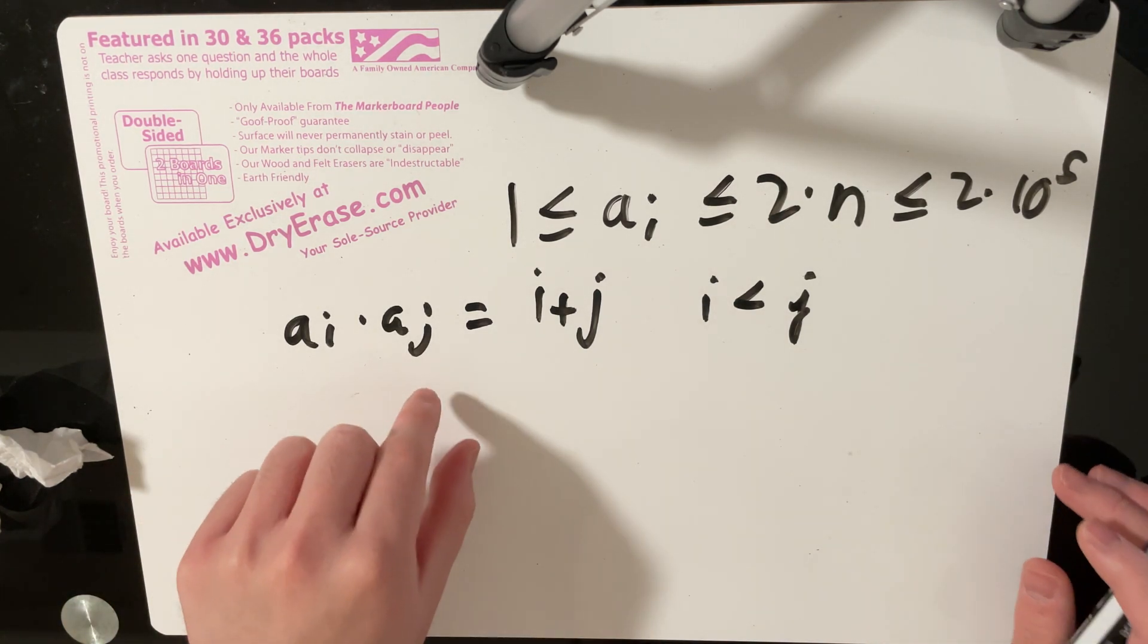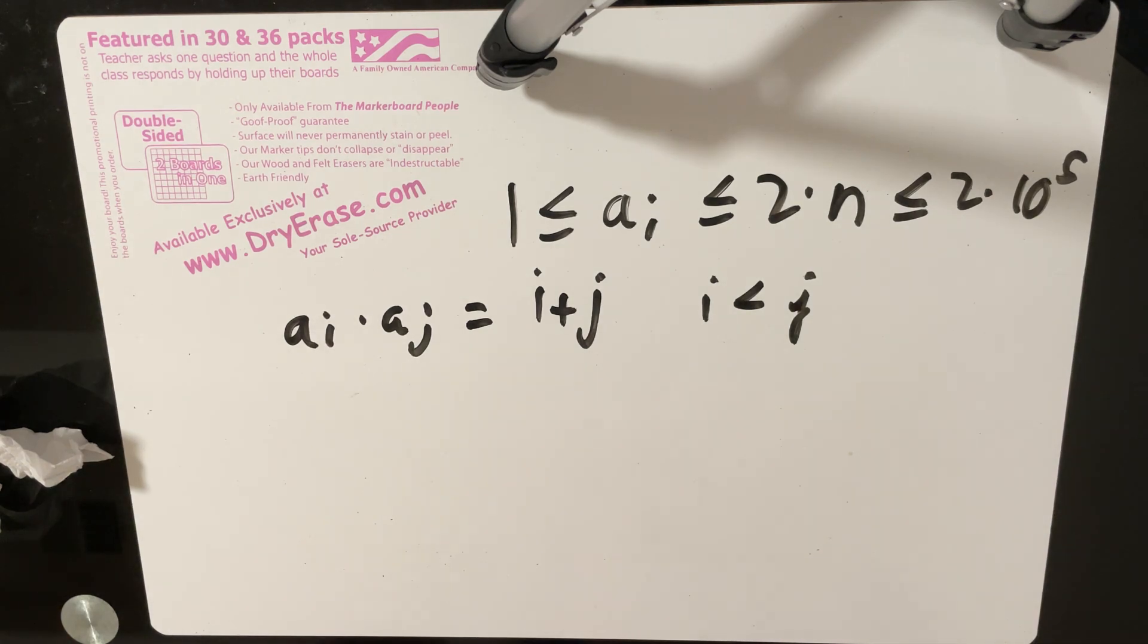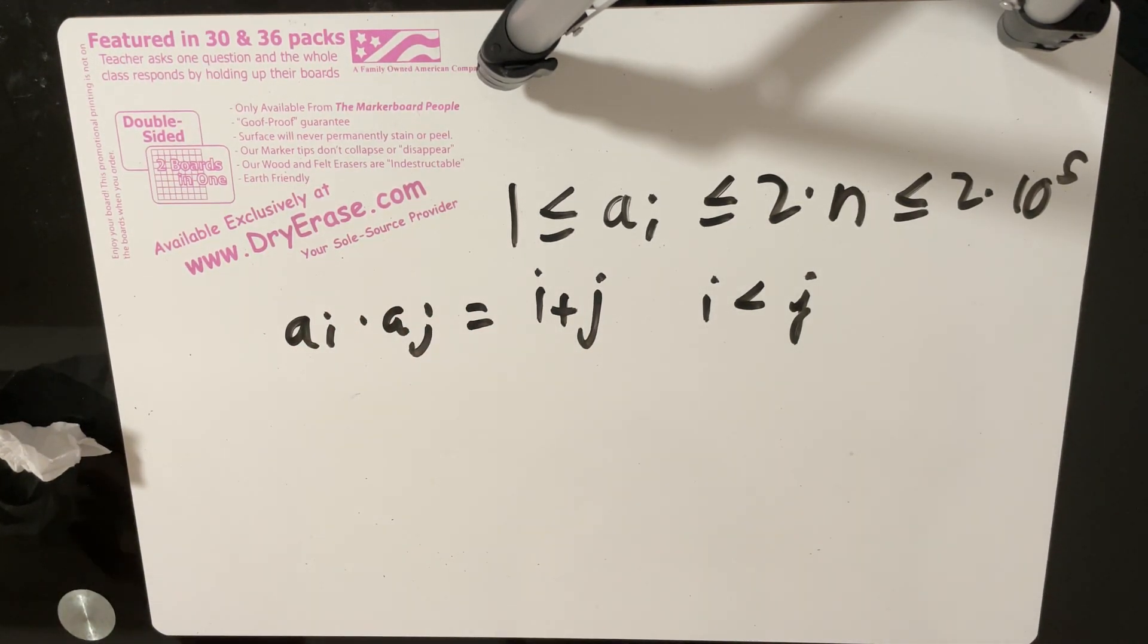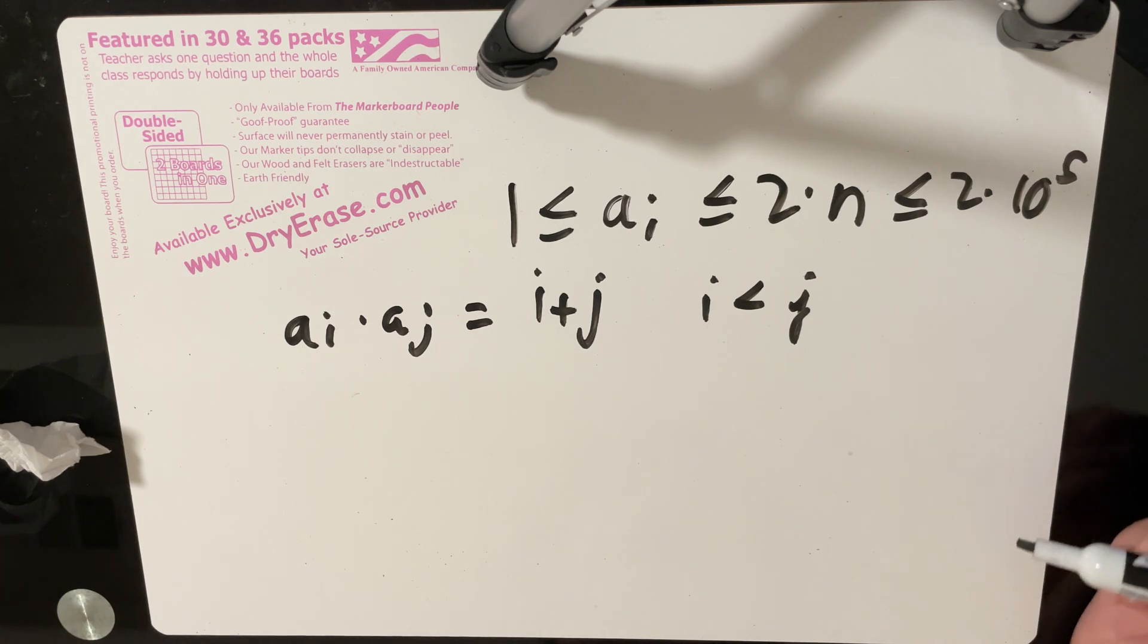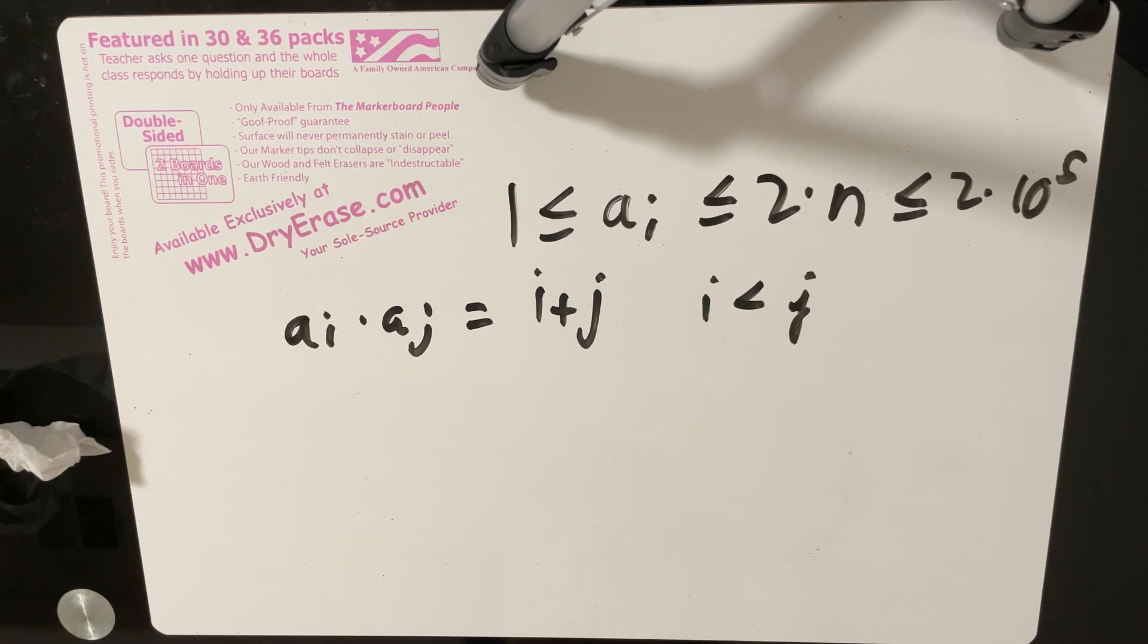So let's assume for example that we sorted this initial array. So obviously if ai was less than aj, if we sorted it, then this pair doesn't really change because i is still less than j. So that doesn't really change at all.